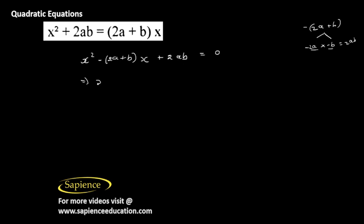All we need to do is just multiply everything inside: x square minus 2ax minus bx plus 2ab equal to 0.